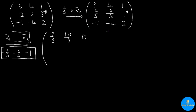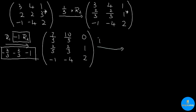The second row and the third row are not changed, so we are going to copy them entry by entry. Finally, we need to ensure that this entry is also a zero. Because this 2 lives in R3, I'm going to put down R3 at the beginning. We are still pivoting at R2, so we put R2 at the end.